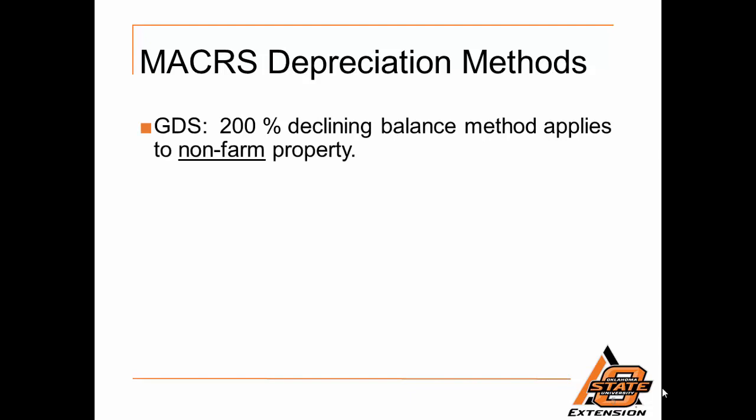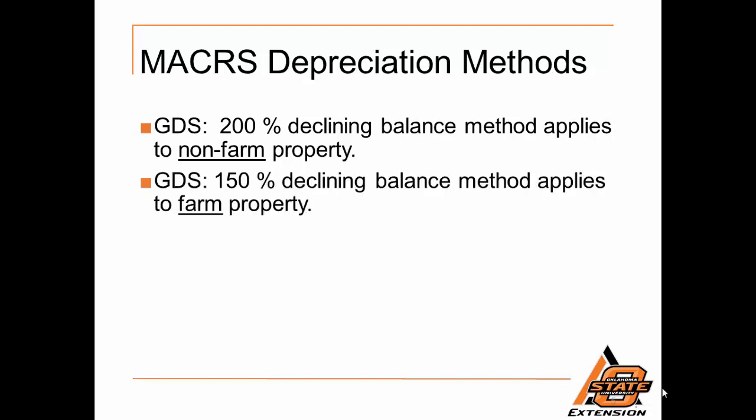Under the MACRS depreciation methods, the general depreciation system uses 200% declining balance, but it only applies to non-farm property. For farm property, we are required to use the 150% declining balance, which applies to all farm property. Consequently it's a little slower, but there are some benefits relating to pre-productive period expenses. For more information on that, refer to the farmer's tax guide.